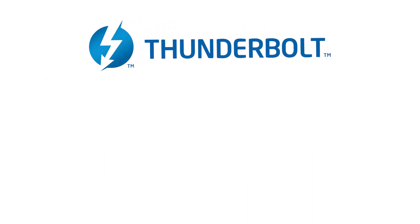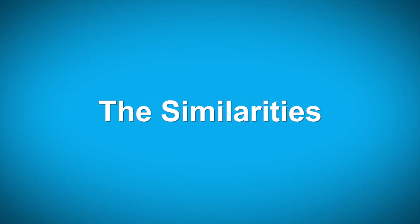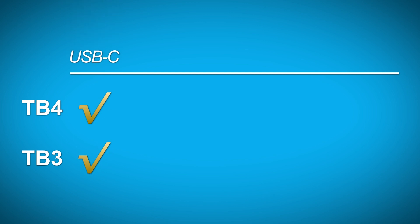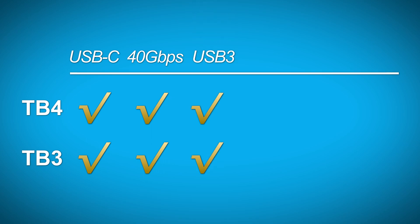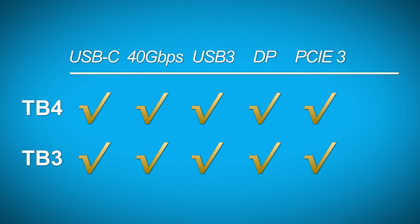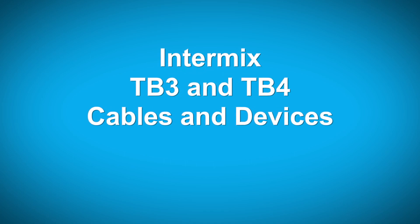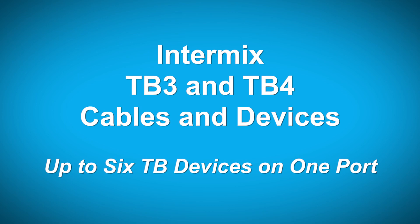Both versions are intended to live together harmoniously in the Thunderbolt ecosystem. Let's start with the similarities. Thunderbolt 4 and Thunderbolt 3 are intended to be interoperable — they use the same protocol. Both versions have the USB-C connector, both have 40 gigabit per second line bandwidth, both support one USB 3 Gen 2 port, both support DisplayPort tunneling, both support PCIe tunneling, and both support six devices total.